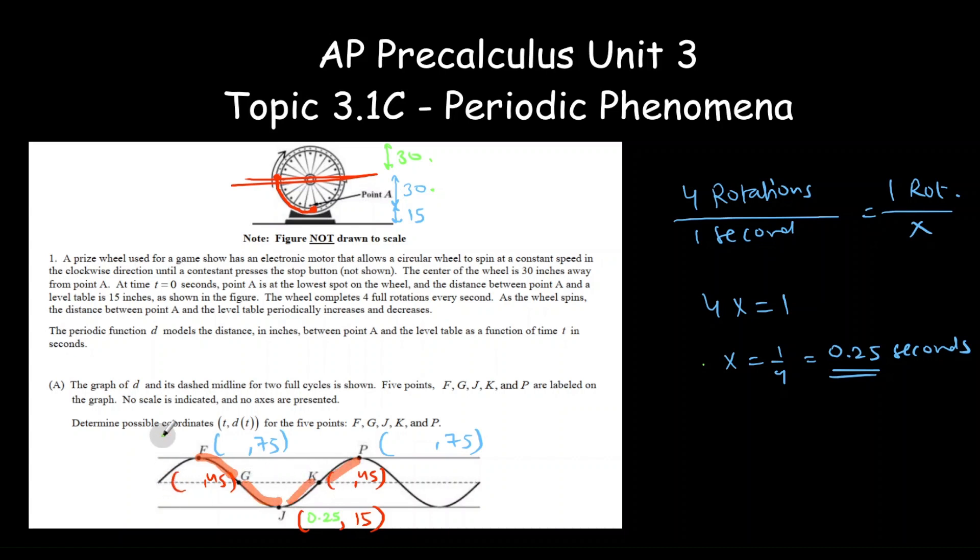1, 2, 3, 4. So 1 cycle is divided into 4 pieces. So if we divide 0.25 in 4 pieces, 0.25 divided by 4, that comes out as 0.0625. And all we have to do is just subtract 0.0625 from here to get G, and then again 0.0625 subtraction to get F.